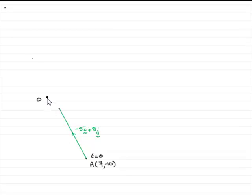So we're given the origin here and we're told that at time t equals 0, the particle is at a point A with position vector 7i minus 10j. I've marked it in as a coordinate, 7 across, 10 units down.